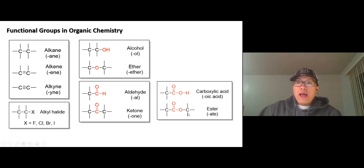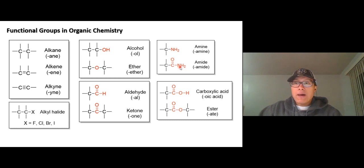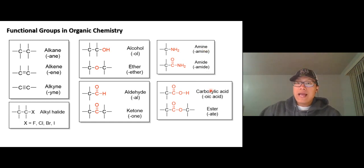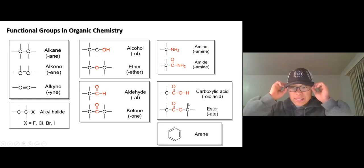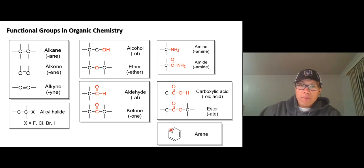If you see an alkyl group, C double bond O, and N, that's an amide — half carboxylic acid and half amine. Amide is made by fusing amine and carboxylic acid together. And lastly, if you see a benzene ring — one benzene, two, three, whatever — we call that an arene. The characteristic is alternating double and single bonds in the ring.